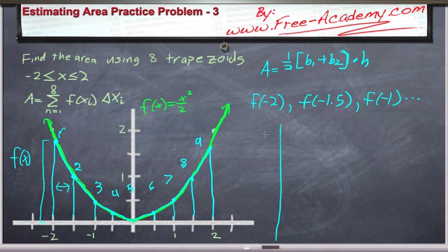So let's make ourselves a little table to calculate this out. Negative 2, negative 1.5, negative 1, negative 0.5, 0 is easy, 0.5, 1, 1.5, and 2.